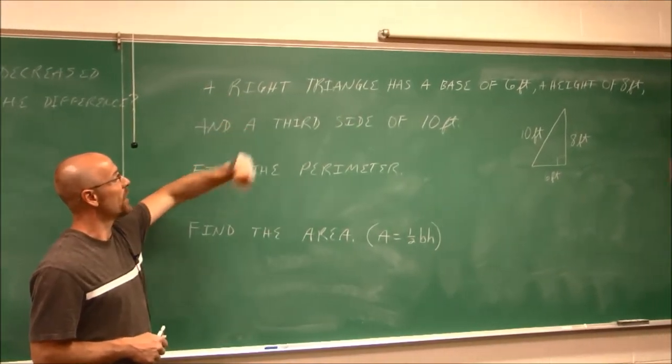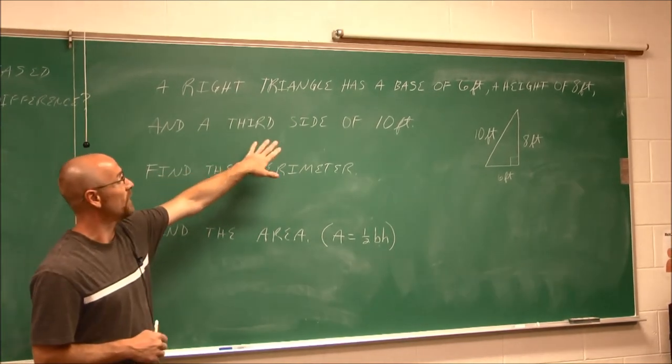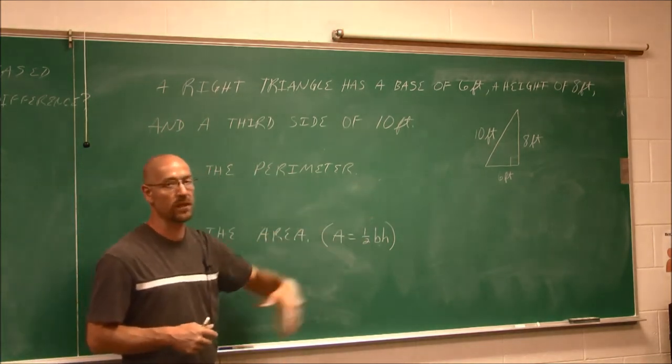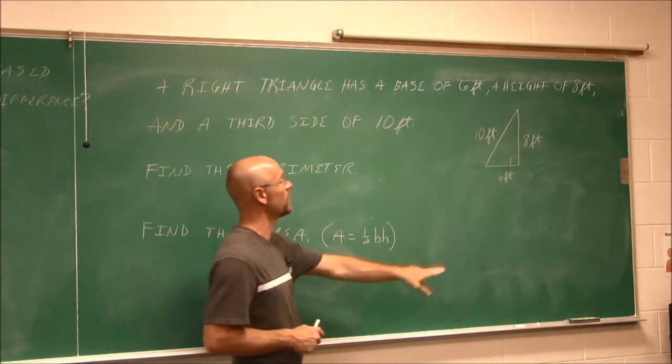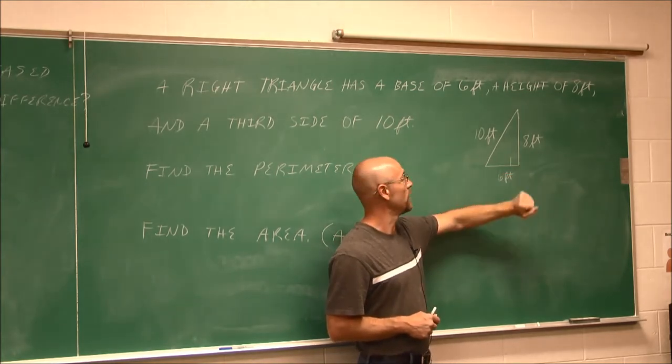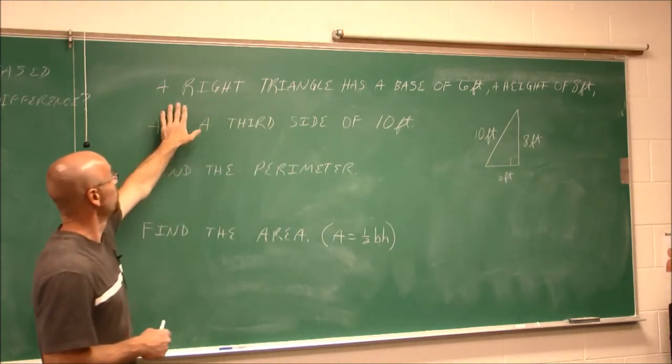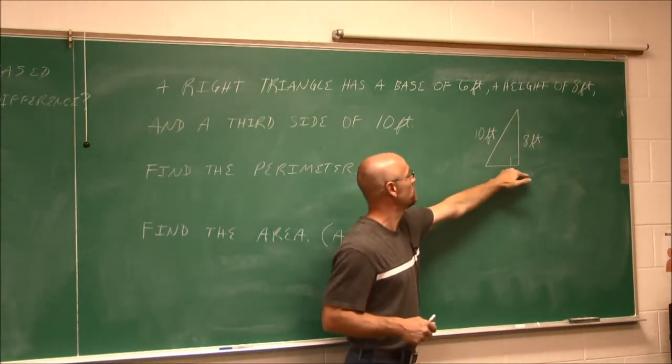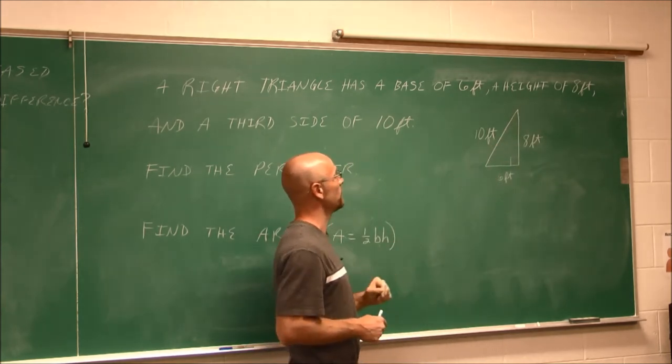Let's do one more example. This one says, a right triangle has a base of 6 feet and a height of 8 feet. And a third side of 10 feet. Well, hopefully we know what a right triangle is. If not, we can refer to the illustration. Or maybe look up some resource to figure out what is a right triangle. A right triangle is defined as a triangle that has one angle of 90 degrees. So we have 6 feet, 8 feet, and 10 feet. And if we read this our second time, it tells me a right triangle has a base of 6 feet. So this is my base. A height of 8 feet. That goes up. So that's 8 feet. And the third side is 10 feet long.